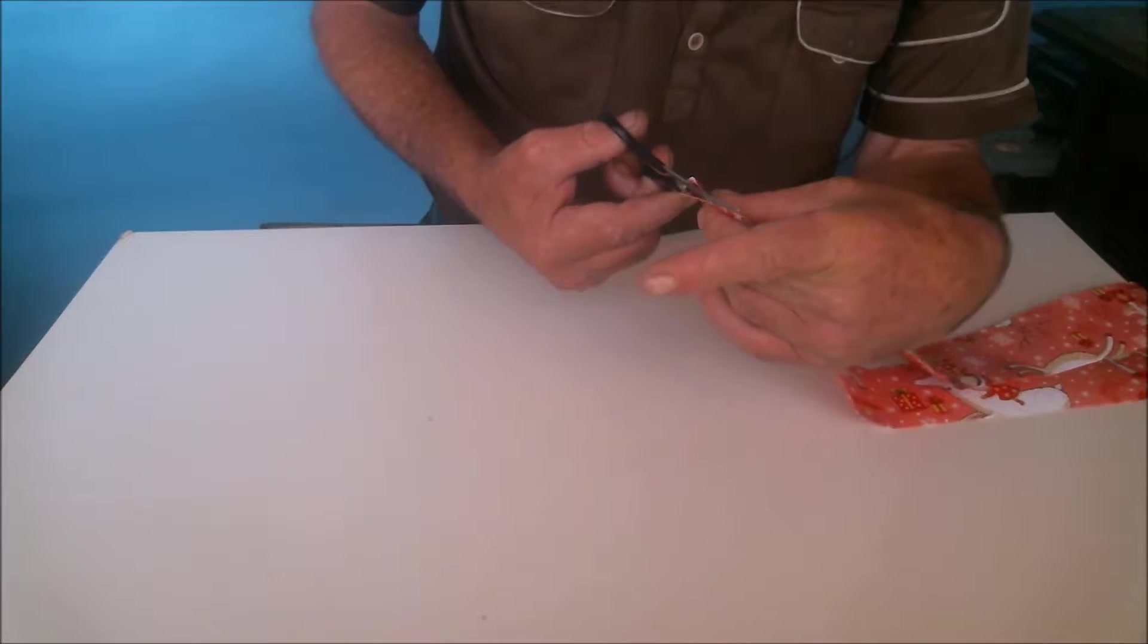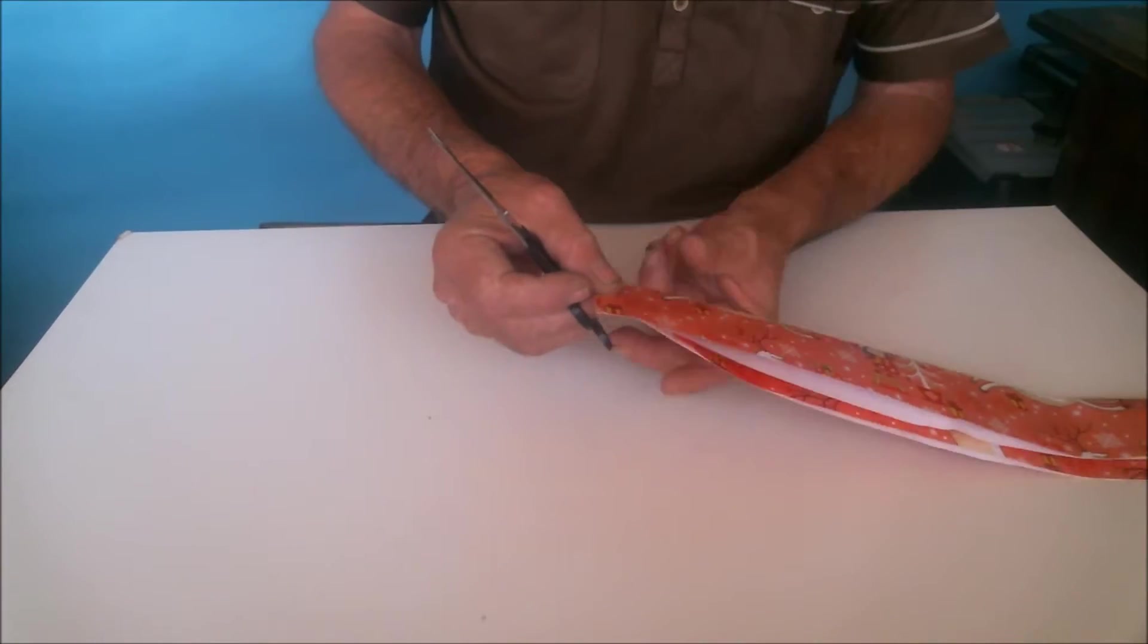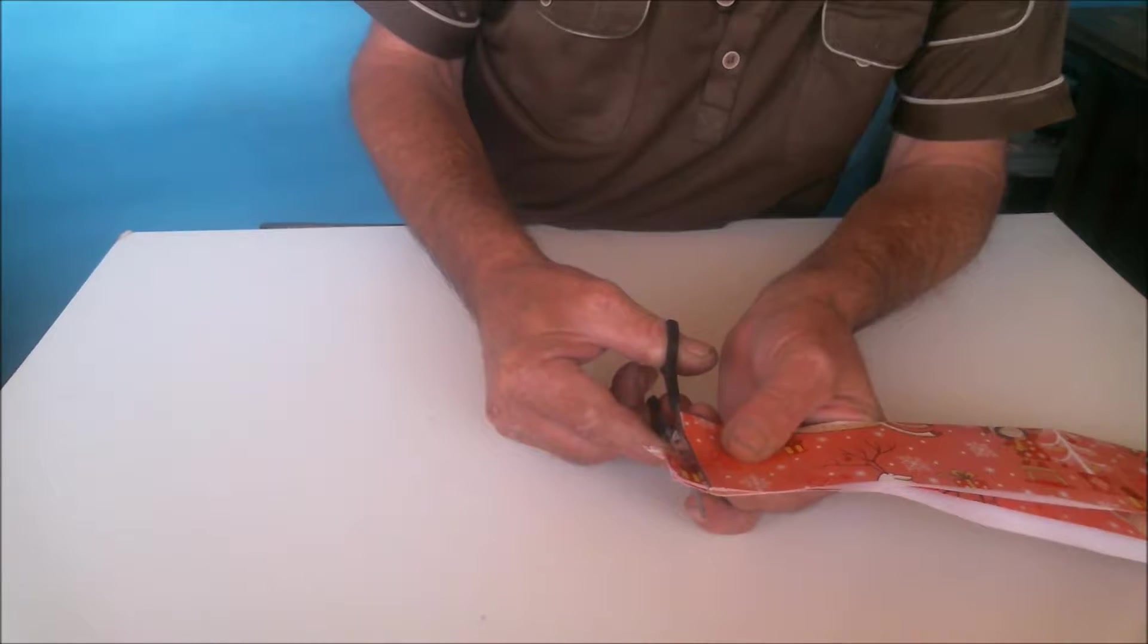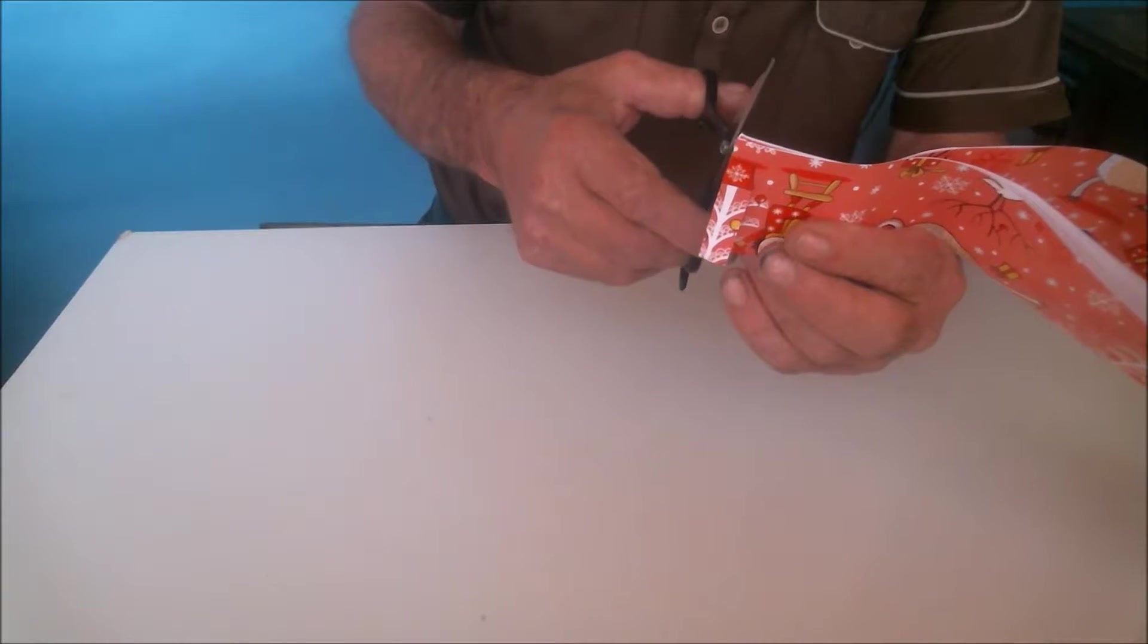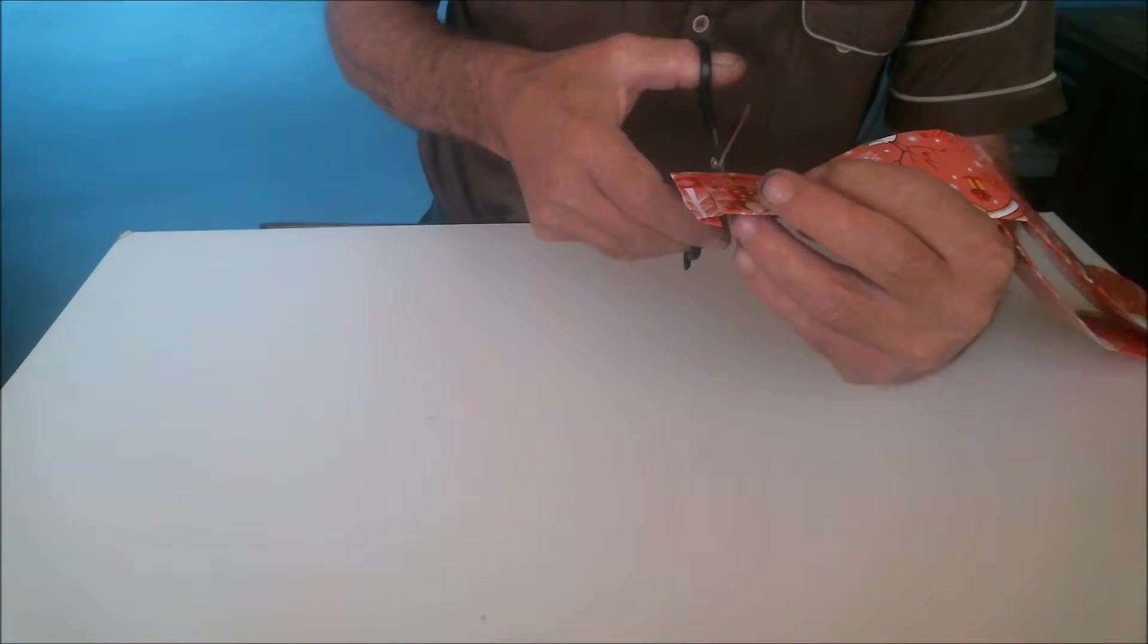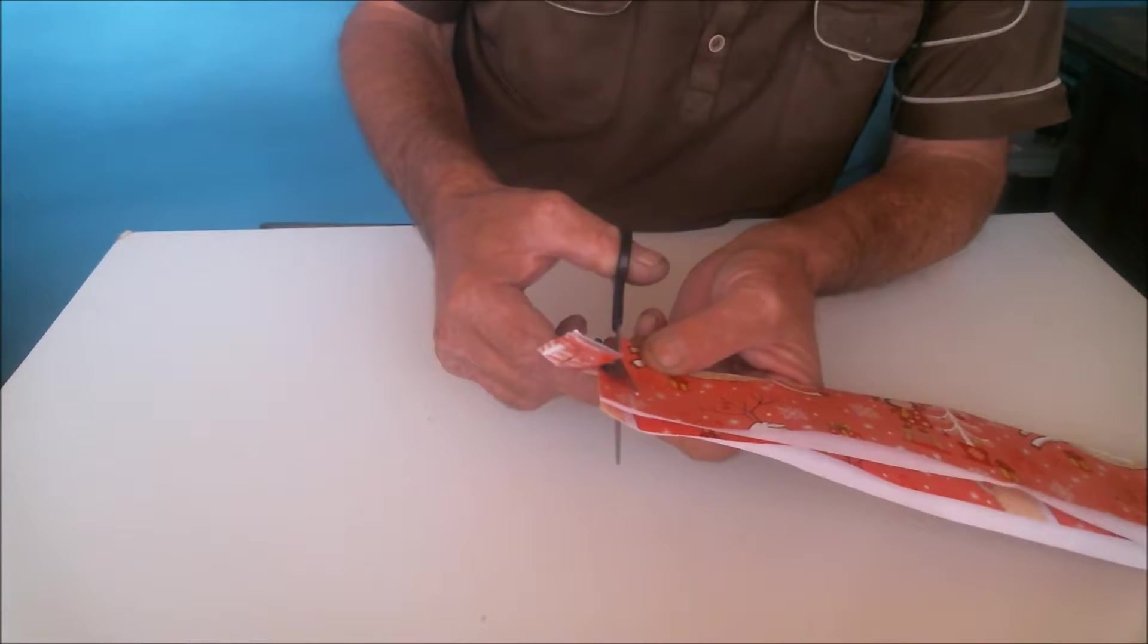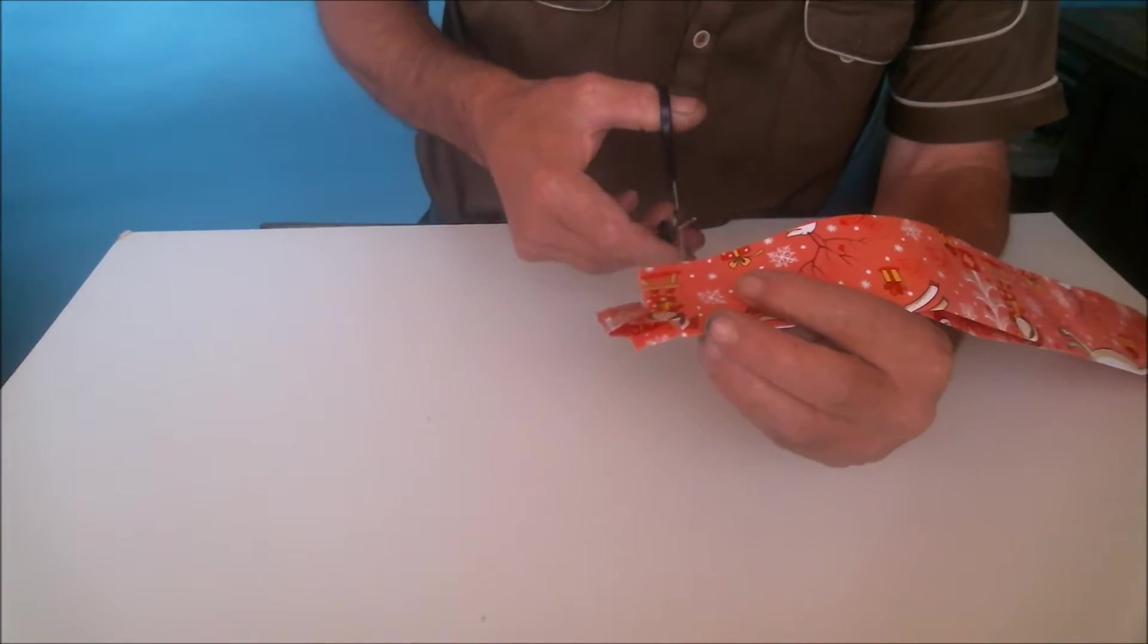Downwards. The cut shouldn't get to the end, just about one centimeter from the end or half a centimeter. One upwards, one downwards, also not to the end. And we continue like that all the way to the end of the folded paper. There, got to the end.